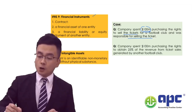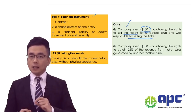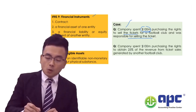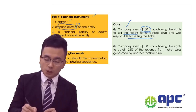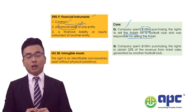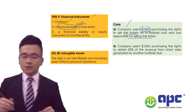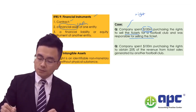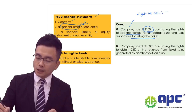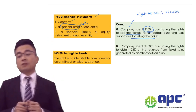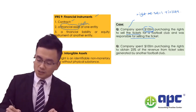The answer is certainly no, because according to IFRS 9, if we have a contractual right to receive cash — that is, to receive a financial asset — that would certainly be a financial asset. However, in this case, we have the right to sell tickets, although we can generate ticket revenue. We only have the right to sell tickets.